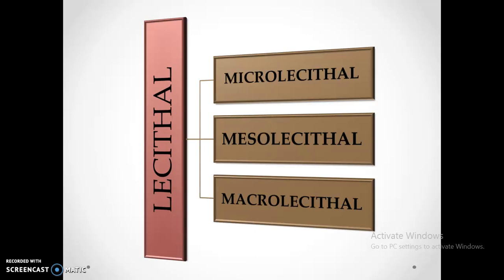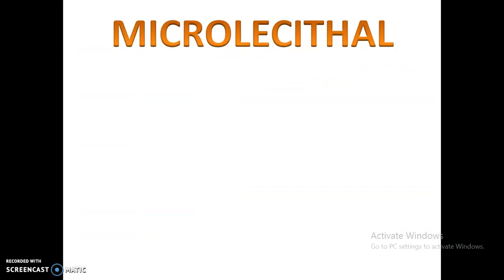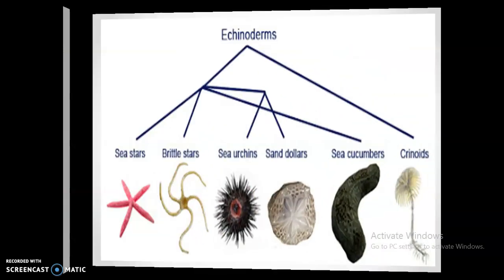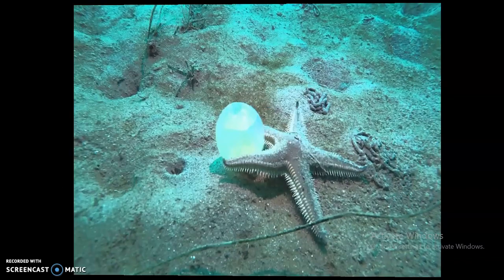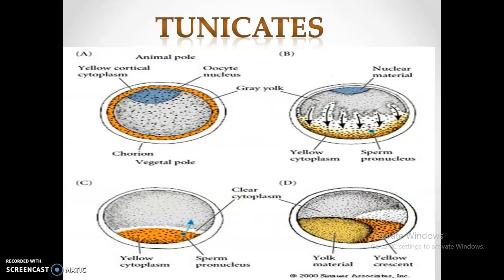Lecithal eggs have a considerable amount of yolk and are categorized as microlecithal, mesolecithal, and macrolecithal eggs. Microlecithal, as the term suggests, means eggs with a small or little amount of yolk. They are also referred to as oligolecithal. Such eggs are found in echinoderms, urochordates, and amphioxus.